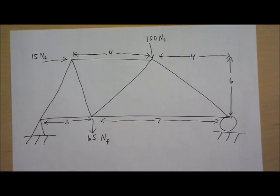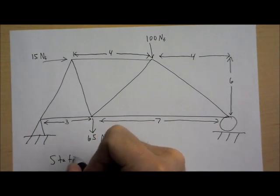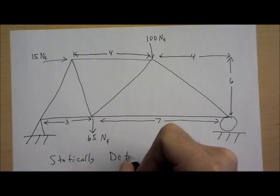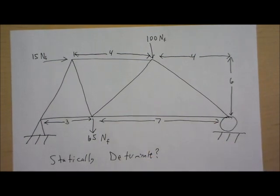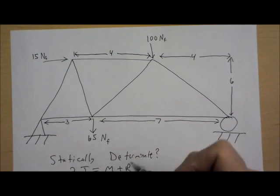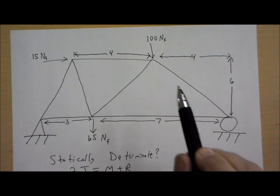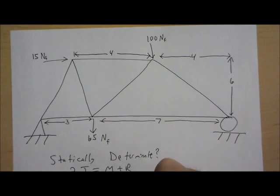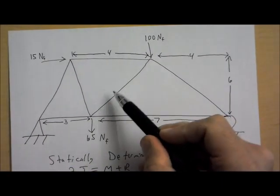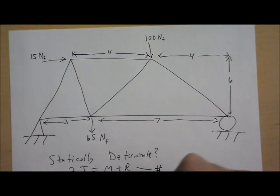Now the very first thing that you want to do when you're solving a truss is to see if it's statically determinate. This is really asking, can it be solved? And so we use this formula 2j equals m plus r. Now j is the number of joints. Any place where two or more members meet is a joint, kind of like a vertex. M stands for members, that would be like the number of beams. And r is the number of reaction forces.